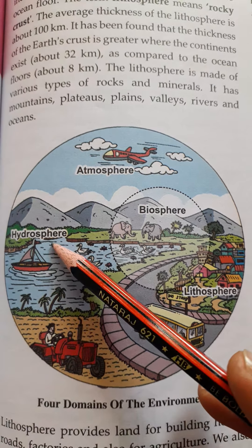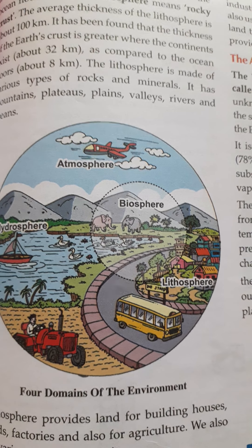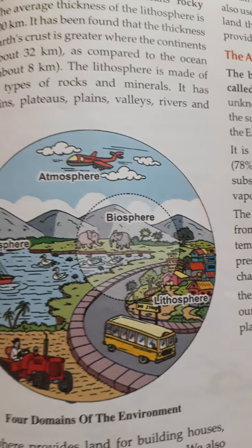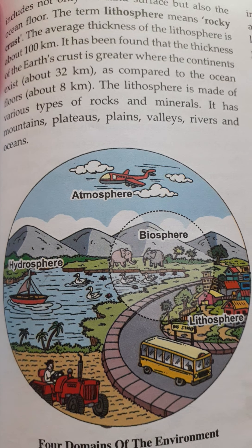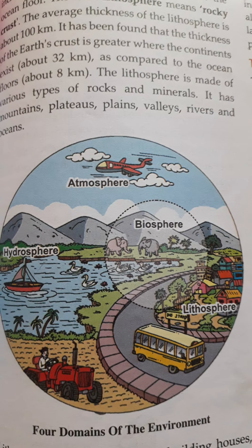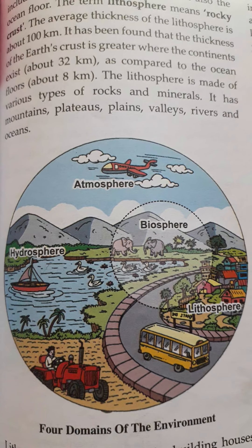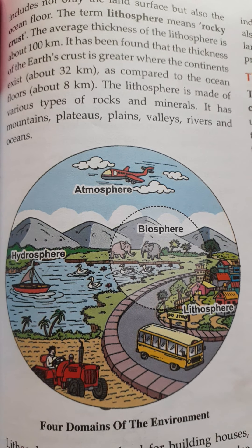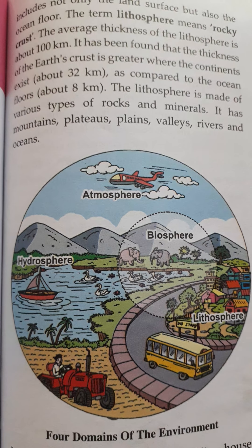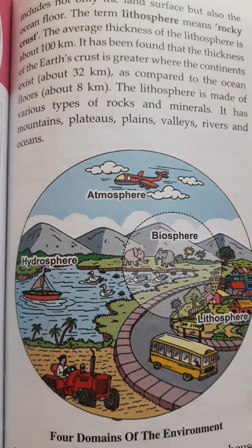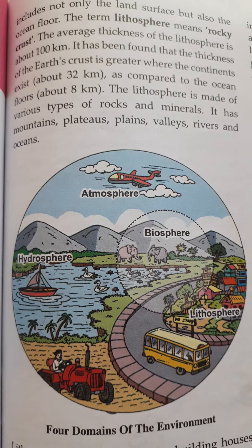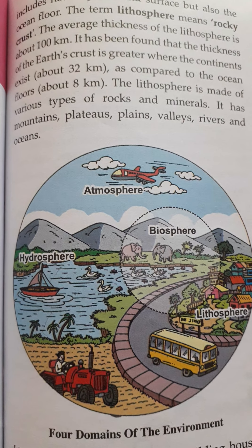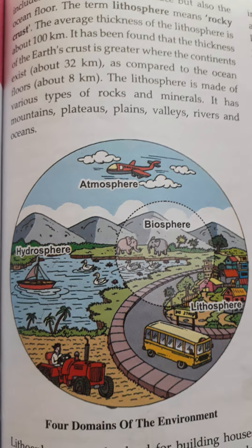Next is hydrosphere. Hydrosphere is the part of the earth's surface which is covered by water. Around 71 percent of the earth's surface is covered with water. This doesn't mean only oceans — it contains seas, lakes, rivers, bays, ice glaciers, groundwater, and freshwater. Together they all make up the hydrosphere.